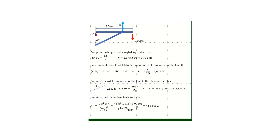We then sum moments about point A, and this will consist of two forces: the vertical component of the force at the joint called R, and the applied 2,000 newton load at the end of the beam. The magnitude of R turns out to be 2,667 newtons. We then compute the axial load in the diagonal member; this load is FB and is computed to be 5,333 newtons.